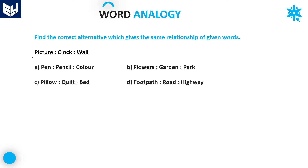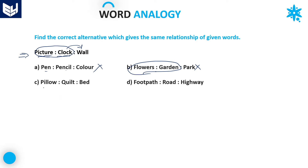Next one — see here: picture, clock, and wall. It is very clear that picture and clock, these two will hang on wall. In the similar fashion, we need an option where the first and second both belong to the third. Looking at the options: pen, pencil, color — no relation. Flowers, garden, park — no relation. But pillow and quilt — these two are laid on bed. So our answer is option C.